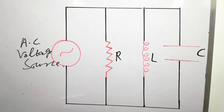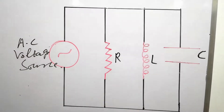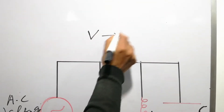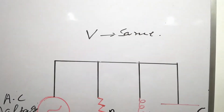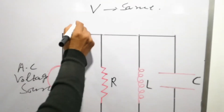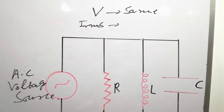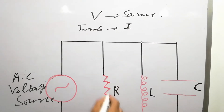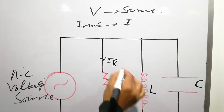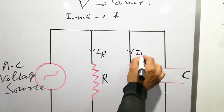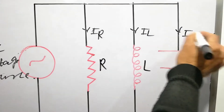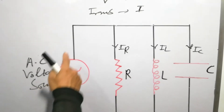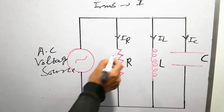In a parallel circuit, the value of voltage is the same for each component. The current value of each component is different. In a parallel circuit, the potential difference — voltage — remains the same for each component, but the current value is different for each component.